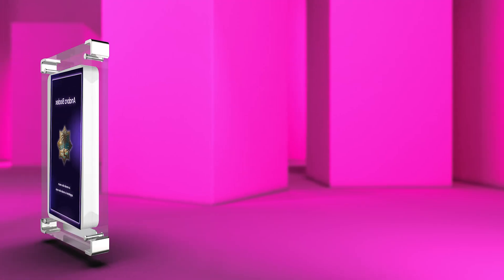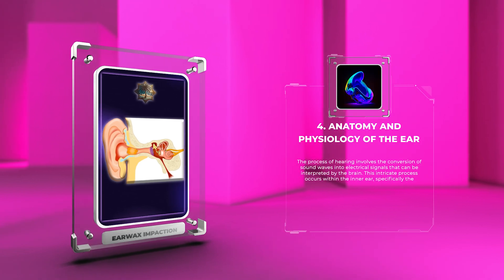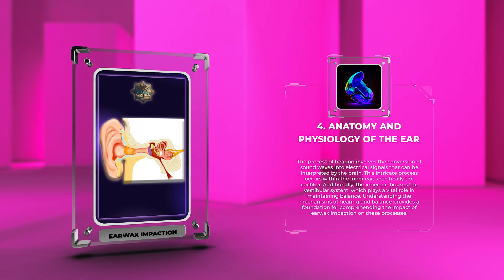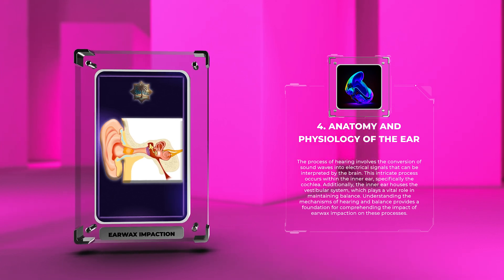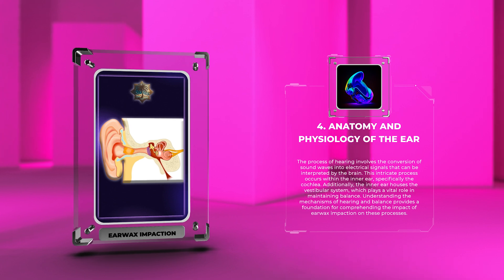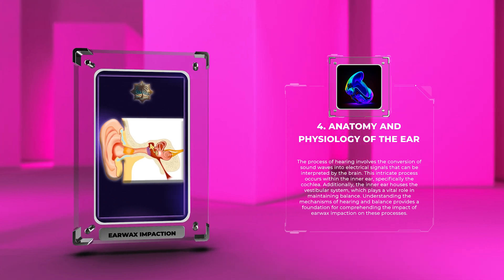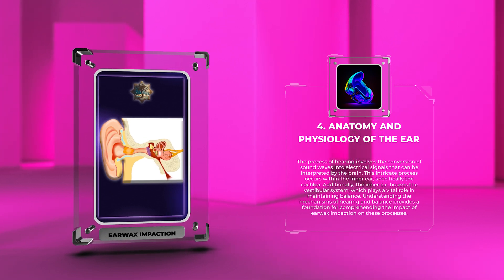The process of hearing involves the conversion of sound waves into electrical signals that can be interpreted by the brain. This intricate process occurs within the inner ear, specifically the cochlea. Additionally, the inner ear houses the vestibular system, which plays a vital role in maintaining balance. Understanding the mechanisms of hearing and balance provides a foundation for comprehending the impact of earwax impaction on these processes.